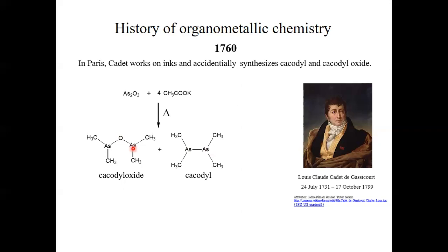These compounds have a very strong, garlic-like smell. You can actually use them to identify arsenic. If you have a sample and suspect there's arsenic in it, you can heat your sample together with potassium acetate. The arsenic in your sample, usually in the form of As₂O₃, for instance if somebody put arsenic oxide into your food, would give a very strange garlic-like smell, and that may be cacodyl or cacodyl oxide.